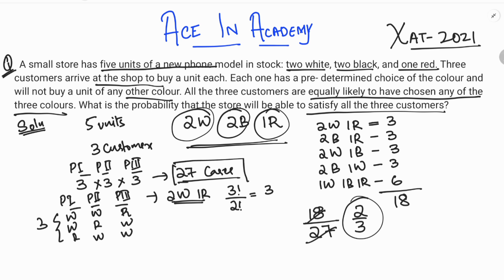So in two-thirds of the cases the store can satisfy all customers. To summarize: we found the total sample space of 27, identified all satisfiable combinations using permutation, and found 18 favorable cases. Dividing 18 by 27 gives the probability of 2/3, which is the answer.